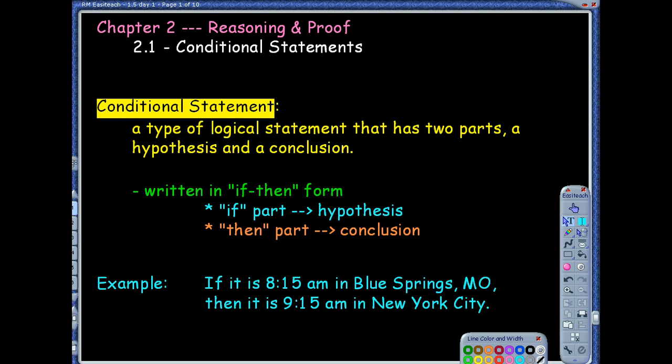What we're going to focus on is what we call conditional statements. A conditional statement is a type of logical statement. This idea of proof is dealing with logic. Anything in math is logical. It has two parts to it. It has a hypothesis and a conclusion. It's always going to look like an if-then statement. The if part is your hypothesis and the then part is your conclusion.